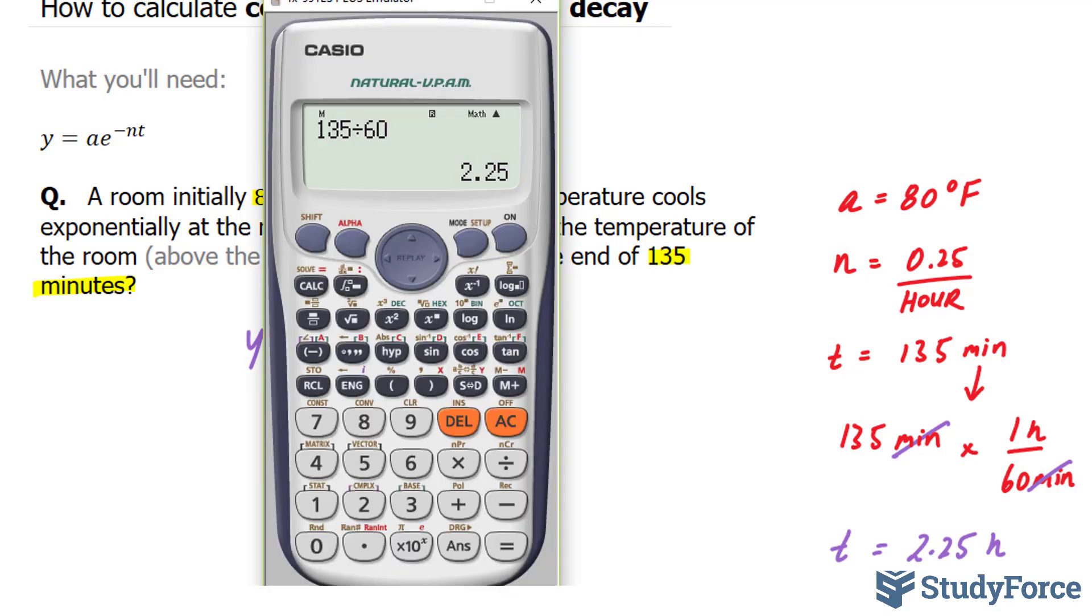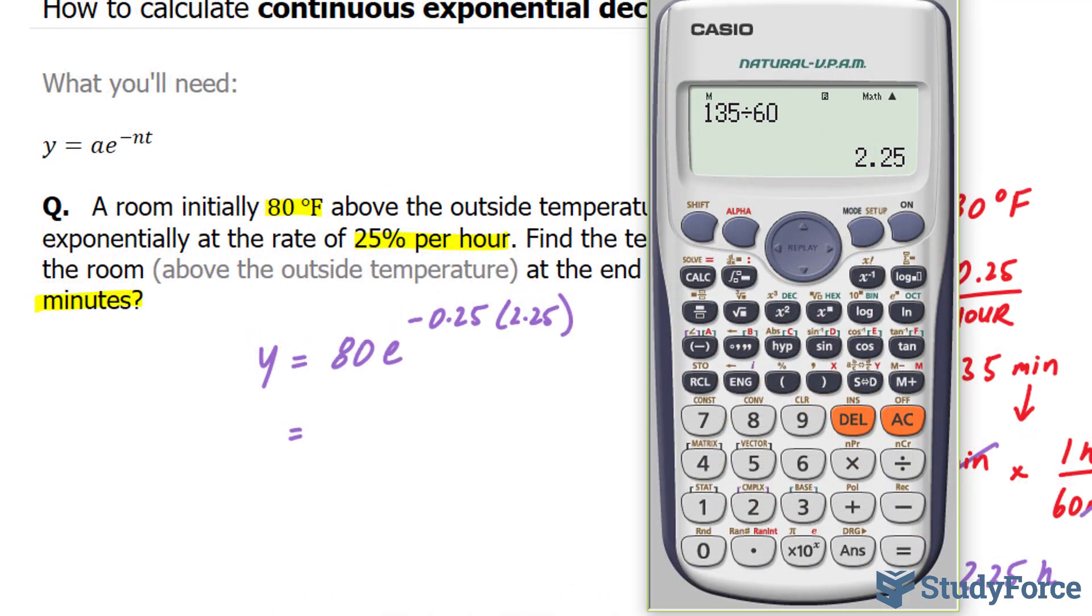Now we can use our calculator to evaluate this. So, 80 times, and to access the number e, you need to click alpha in this button, to the power of negative 0.25.